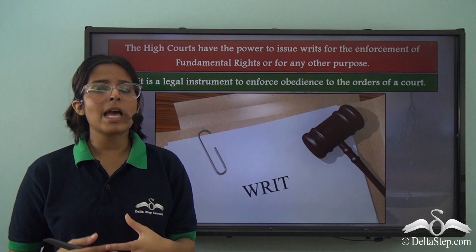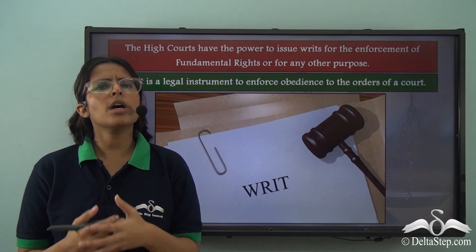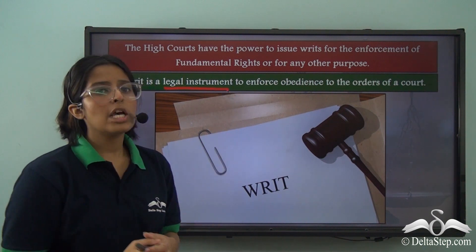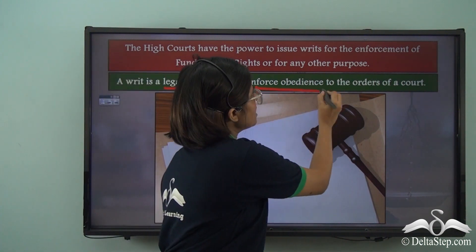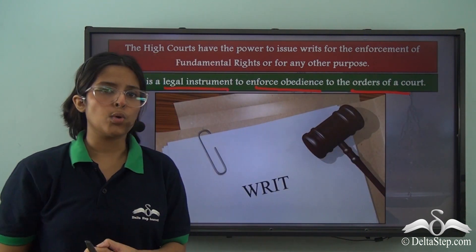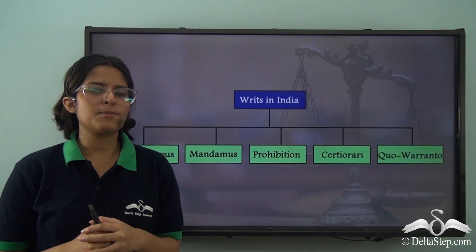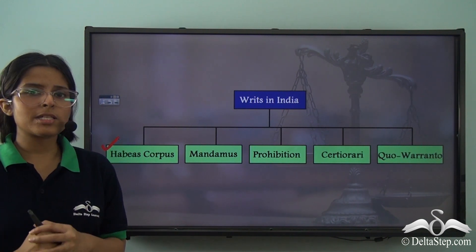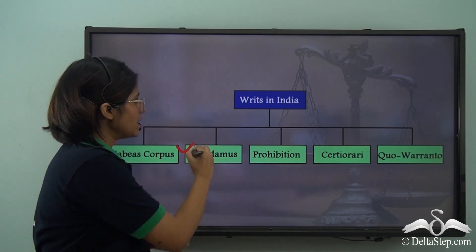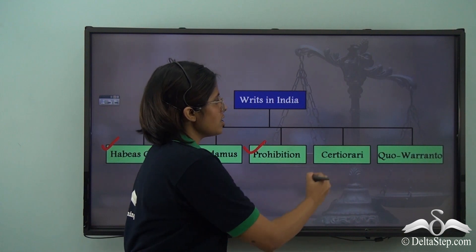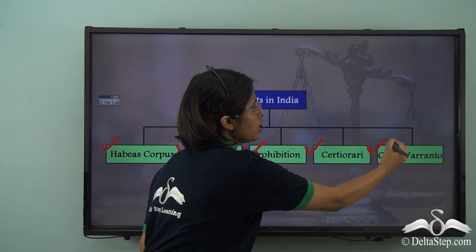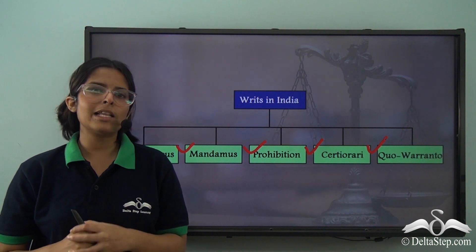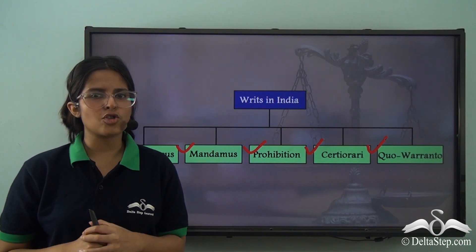The High Courts can issue writs. What are writs? Writs are legal instruments to enforce obedience to the orders of a court. We have five types of writs in India: the writ of habeas corpus, mandamus, prohibition, certiorari, and quo warranto. To know more about these writs, you can click on the link to access the iDictionary feature.